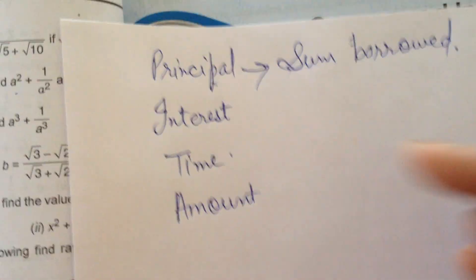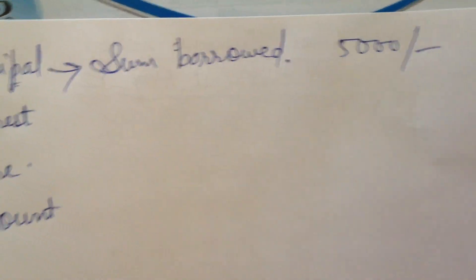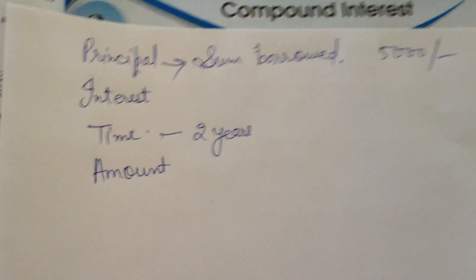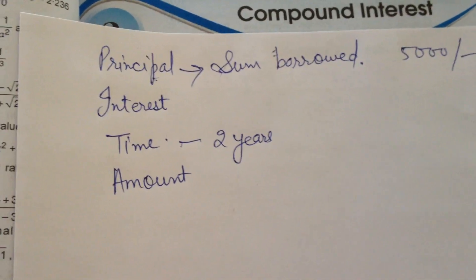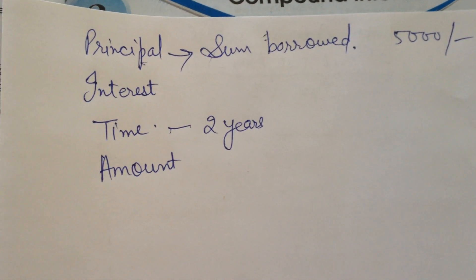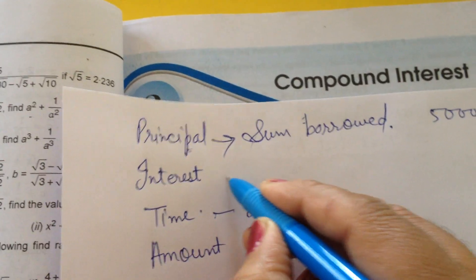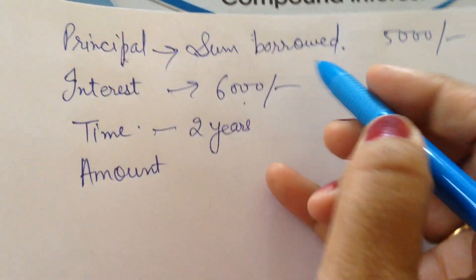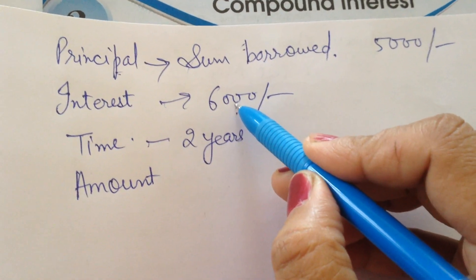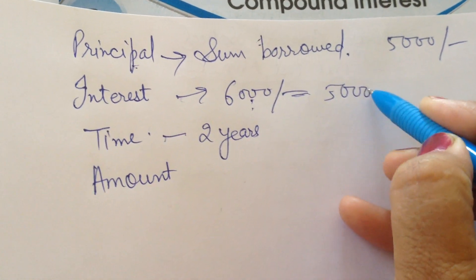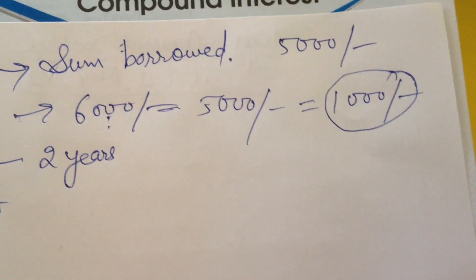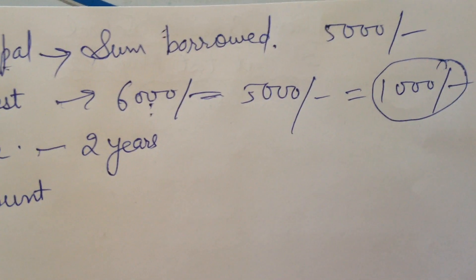Then what is interest? Suppose you are borrowing 5,000 rupees for two years. You commit to that person: please give me 5,000 rupees for two years, I will return it after two years. Suppose you end up paying 6,000 rupees — so 6,000 minus 5,000, you paid 1,000 extra. This extra money is known as interest — whatever you are paying extra, that money is known as interest.